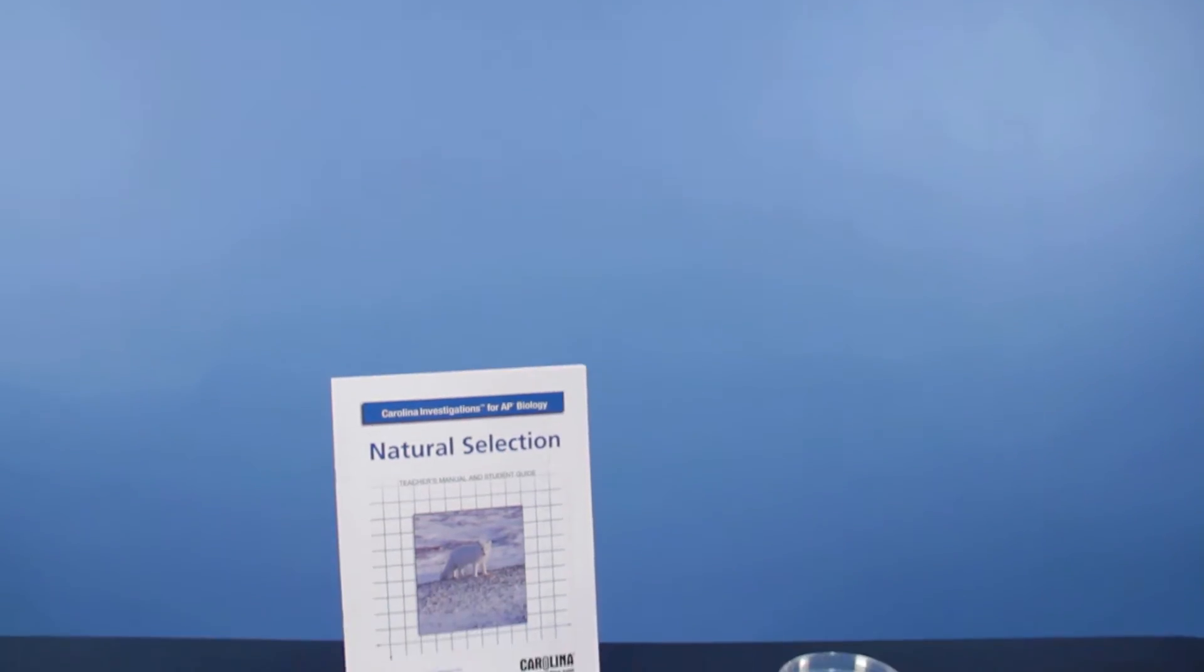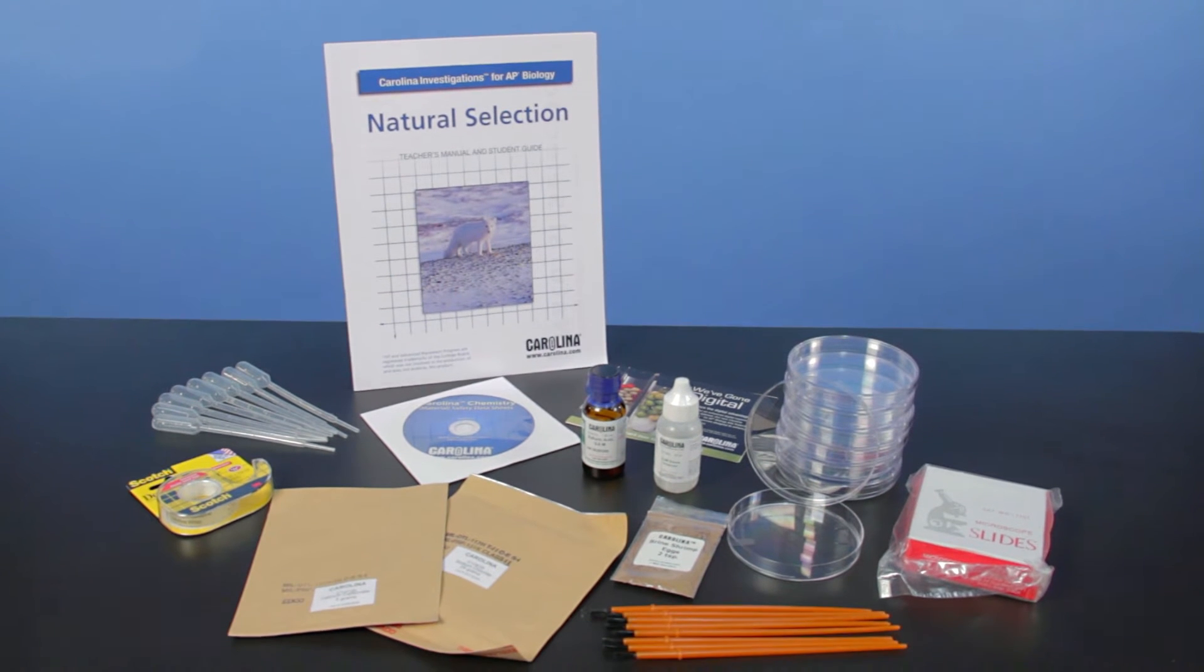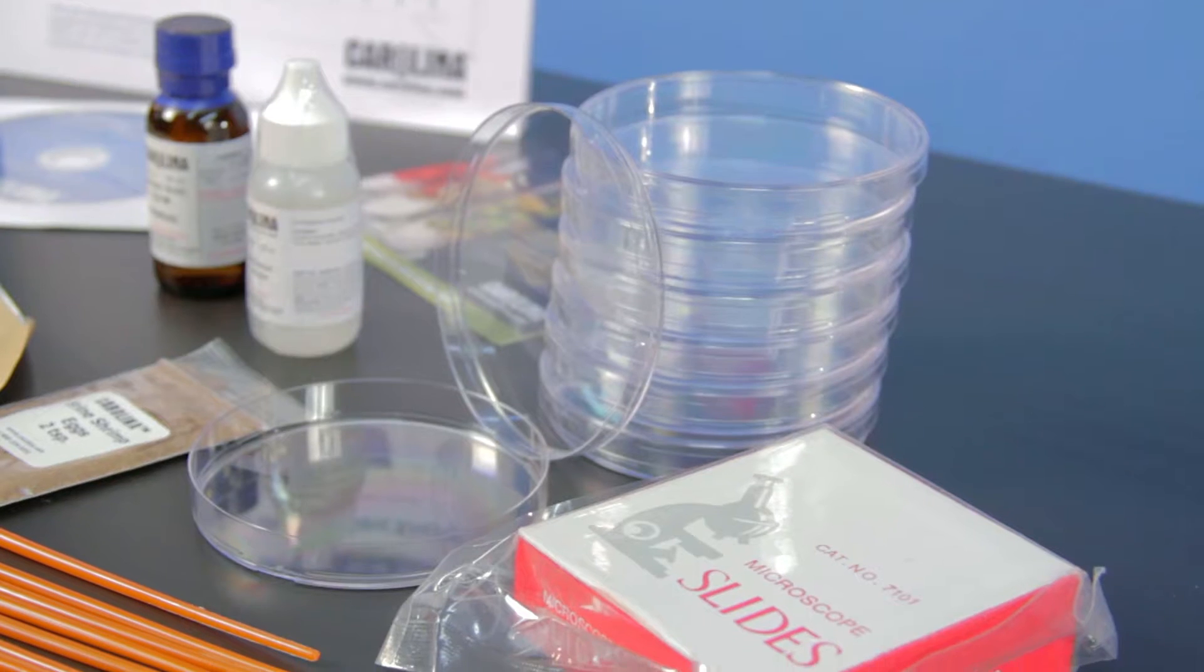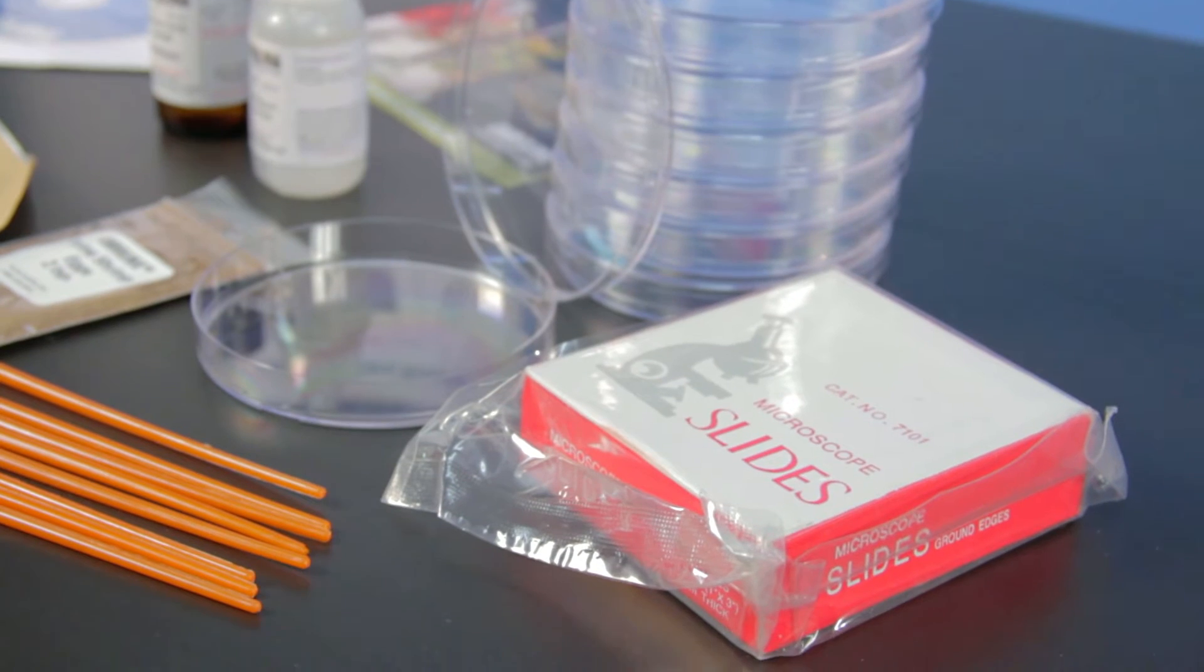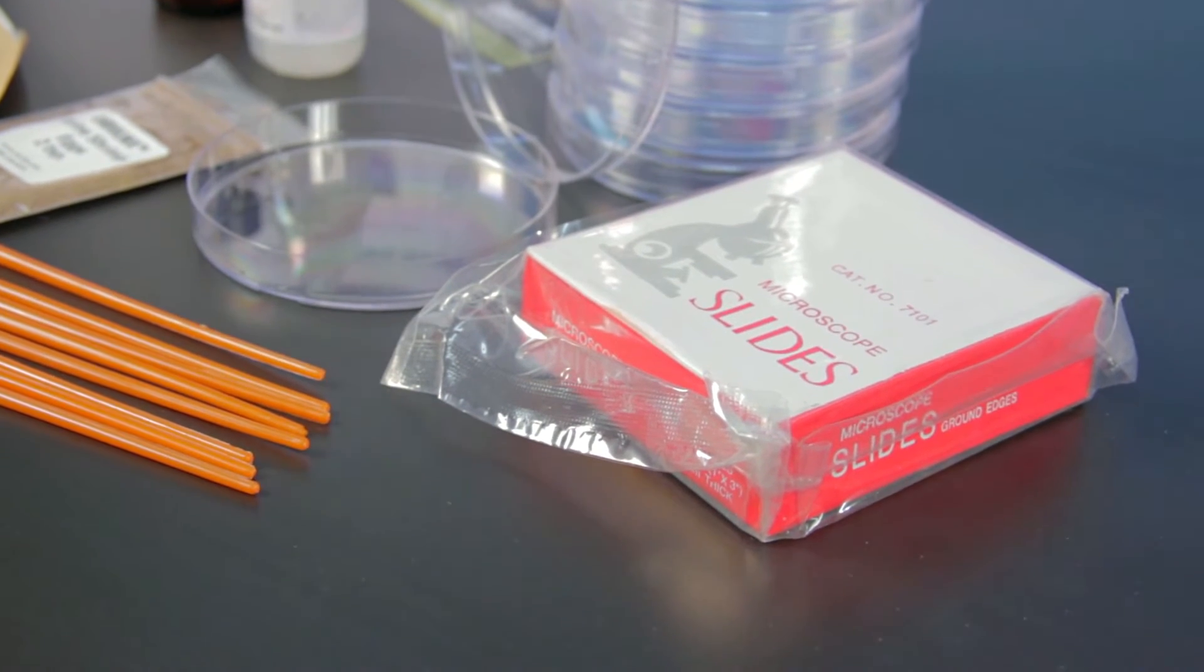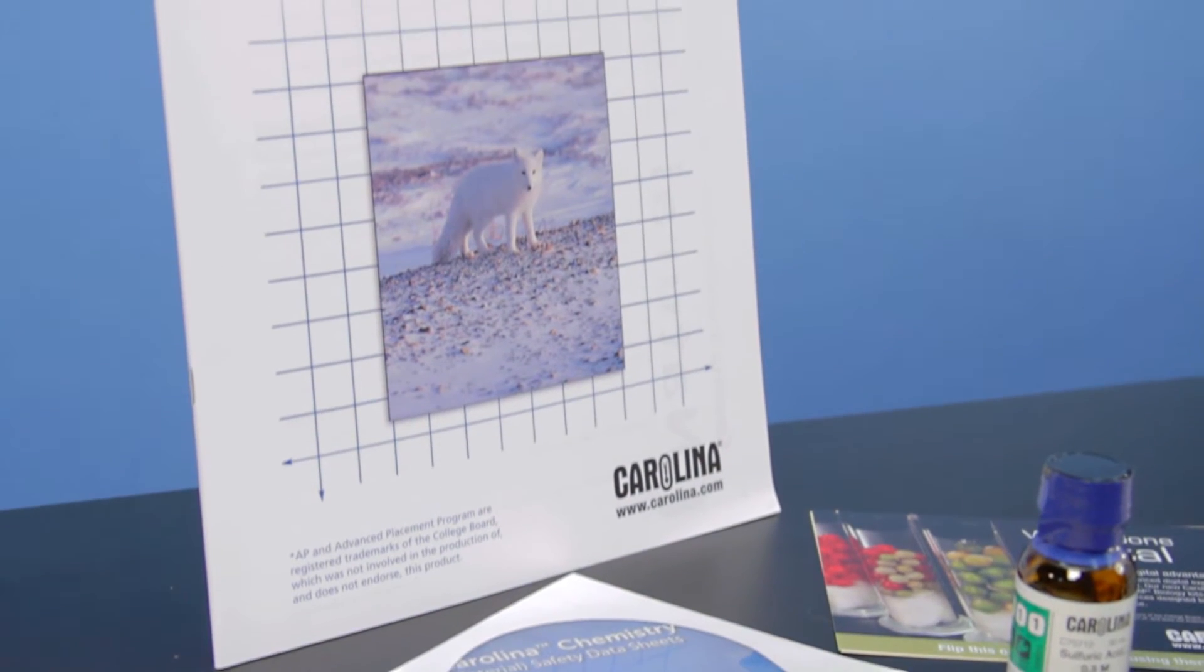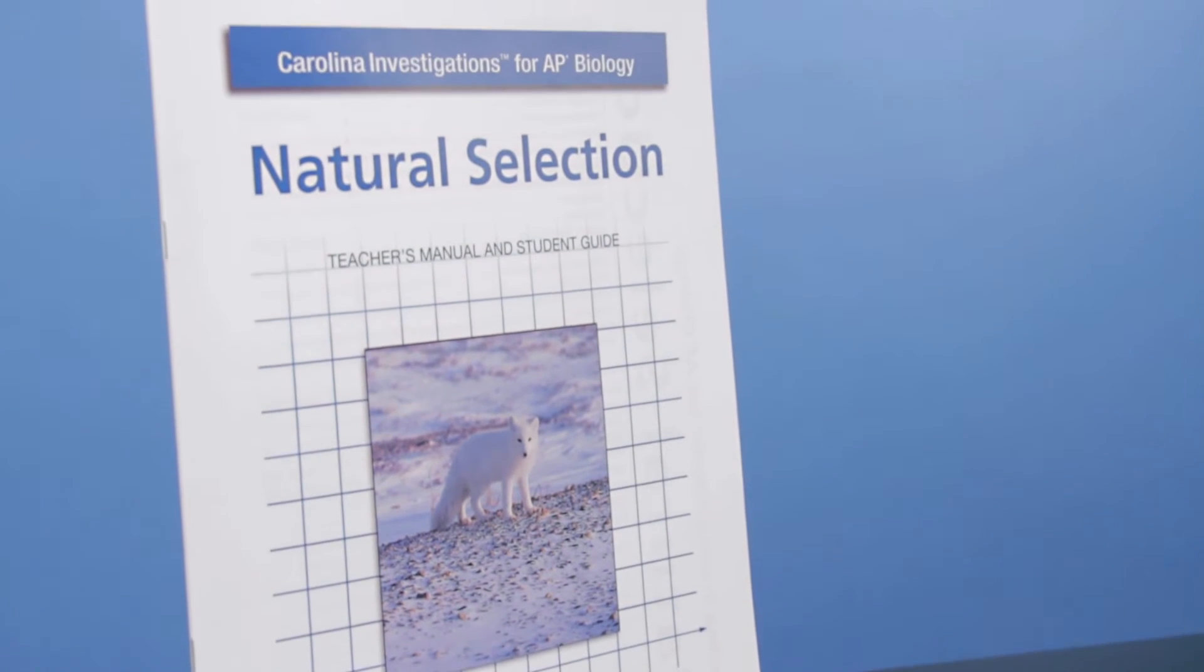This lab activity is a perfect fit for the new AP Biology curriculum and plugs perfectly into big idea number one. Learning about a key mechanism for evolution has never been more approachable and easier in your classroom. Besides meeting various AP standards, this lab offers a perfect alternative to the AP Example Lab dealing with the artificial selection in Wisconsin fast plants.